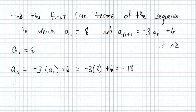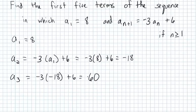That negative 18 is A sub 2. We're going to use that when we find A sub 3. A sub 3 is negative 3 times negative 18 plus 6. This is going to come out to be positive 60. We're going to use that 60 when we go to find A sub 4. A sub 4 is going to be negative 3 times A sub 3, where we just found A sub 3 is 60, plus 6, and that's going to come out to be negative 174.